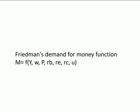Friedman's demand for money function is: M = f(Y, w, P, Rb, Re, Rc, u), where M is aggregate demand for money, Y is total flow of income, w is ratio of non-human to human wealth, P is the general price level, Rb is the market bond interest rate, Re is the market interest rate of equities, Rc is the expected rate of change of prices of commodities, and u is utility-determined variables which tend to influence tastes and preferences.